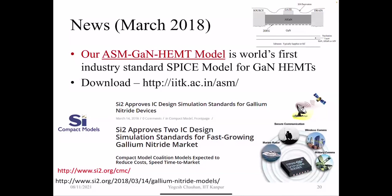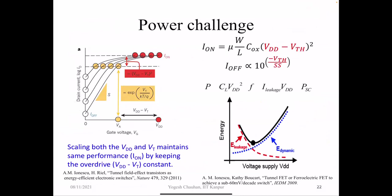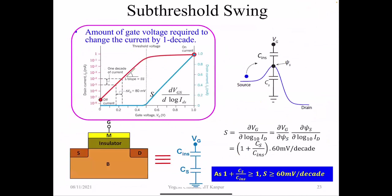Now let's go to the NCFET. Power is a big challenge, and given the sub-threshold slope, we are not able to reduce it. If you want to reduce VDD while keeping the same I-on, I-off goes up — that's a big problem. The sub-threshold slope is defined mathematically as (1 + C_semiconductor / C_insulator) × 60 mV/decade. To get one decade change in current, you apply delta VG, which we call sub-threshold slope. Since these capacitances are positive, this quantity is greater than one, meaning sub-threshold slope cannot be less than 60 mV/decade.